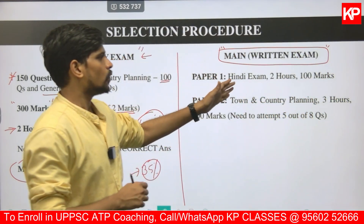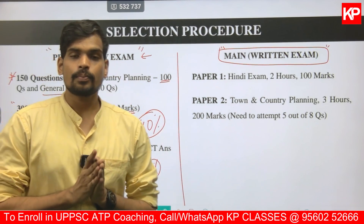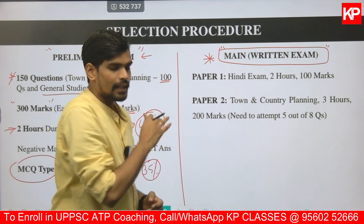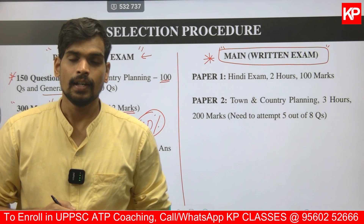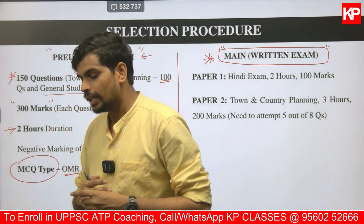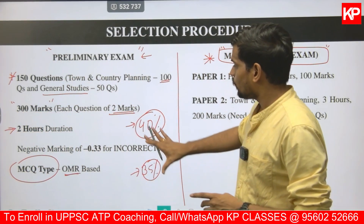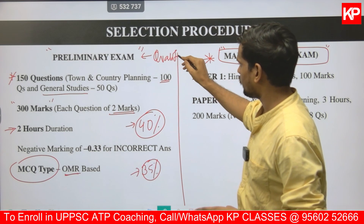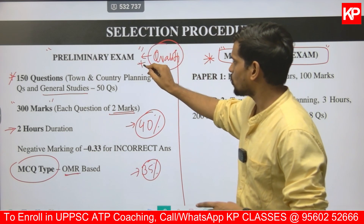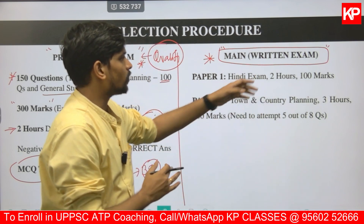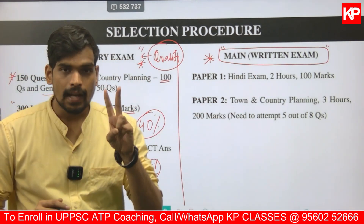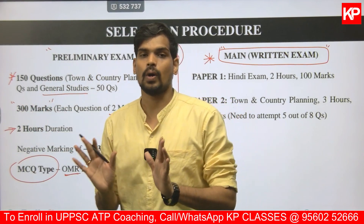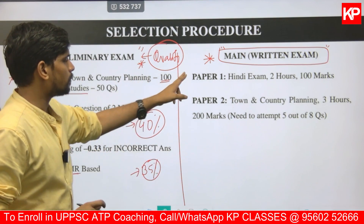Once selected into the merit list, you can apply for the main written examination. The main examination is the final selection criteria for your appointment as ATP under UPPSC. Irrespective of your prelims weightage — which is just for qualifying — your selection is based on the mains. The main written examination will have two question papers: paper 1 and paper 2.